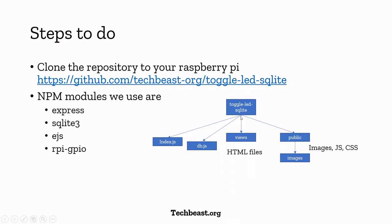The project structure has `toggle-led-sqlite` as the master folder. Under that you'll see `index.js` where all source files and routes reside — routes to turn the LED on, routes to turn it off, and routes to get all information stored in the database. Then `db.js` establishes the database connection, creates the database, and creates a table to insert all LED statuses. The `views` folder has all the HTML files — an index page to turn the LED on and off, and a logs page to see all device logs. The `public` folder contains images, JavaScript, CSS and other public assets.